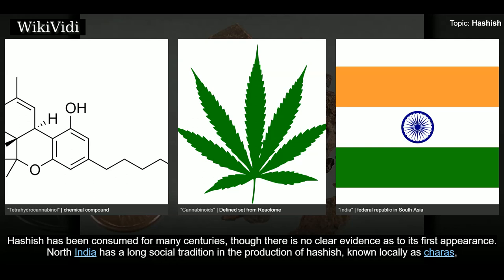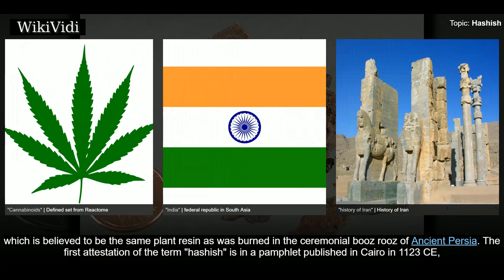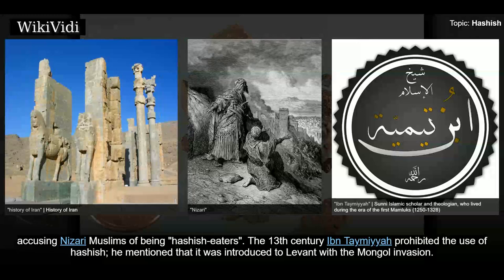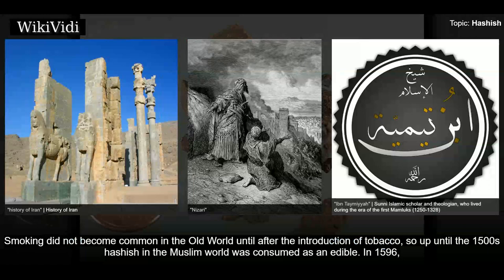North India has a long social tradition in the production of hashish, known locally as shirass, believed to be the same plant resin burned in the ceremonial rites of ancient Persia. The first attestation of the term hashish is in a pamphlet published in Cairo in 1123 CE, accusing Nizari Muslims of being hashish eaters. The 13th-century Ibn Tamir prohibited the use of hashish, mentioning it was introduced to the Levant with the Mongol invasion.